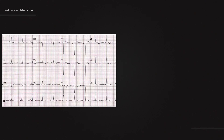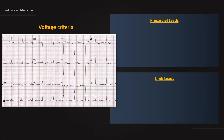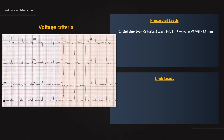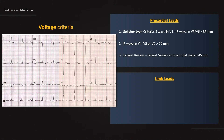Coming to voltage criteria first. There are numerous voltage criteria for LVH. Some criteria use voltage calculations in precordial leads and others in limb leads. Just to remind you, the height of one small square on ECG is equal to 1 mm. The most commonly used criterion is the Sokolov-Lyon criterion: S-wave depth in V1, when added to the tallest R-wave height in either V5 or V6, is more than 35 mm — that is, more than 35 small squares in total. Other voltage criteria include R-wave in V4, V5, or V6 greater than 26 mm, and largest R-wave plus largest S-wave in precordial leads greater than 45 mm.